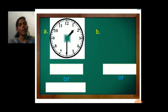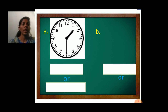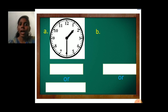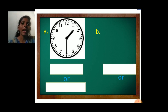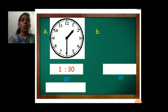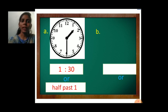Now see first, A. First concentrate on the hour hand. The hour hand has crossed number 1. So it is 1, and the minute hand is at 6 — which means 30 minutes. So it is 1:30, 1 hour 30 minutes. Or instead of 30 minutes, we can write half past 1. So it is 1 hour 30 minutes or half past 1.